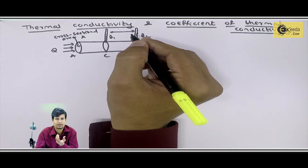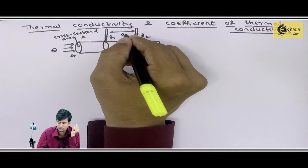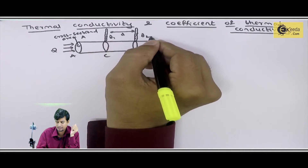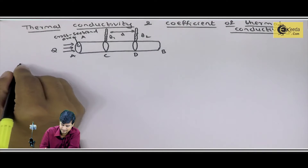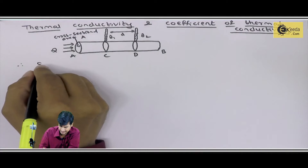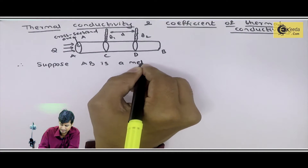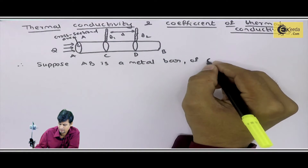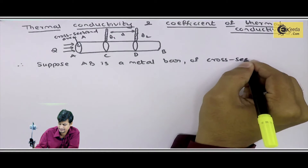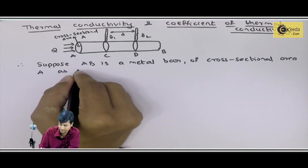We need to know how much temperature is produced in the rod and how the heat transfer occurs. The distance between two thermometers will be measured, giving theta 1 and theta 2. AB is a metal bar with a cross-sectional area, as shown in the figure.